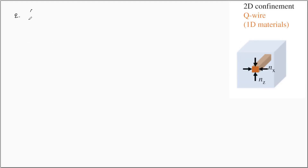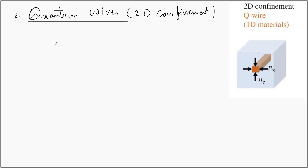Next, we discuss quantum wires. A quantum wire is a one-dimensional nanostructure in which there is confinement along two directions and the particle is free to move in the third direction. The confinement is along the x and z directions, and there is no confinement along the y direction, so the structure extends uninterrupted along y — that is why we call it a wire. The particle has discrete energy levels associated with x and z, and continuous energies along y.